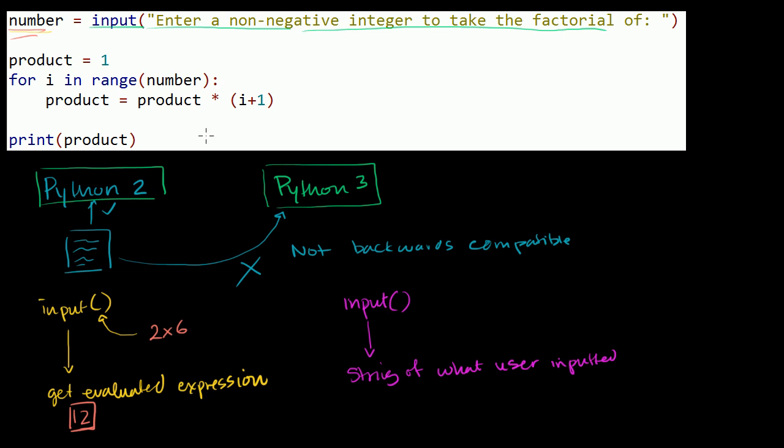In Python 3, if we just did this and the user inputted 2 times 6, so once again the user inputs 2 times 6, then what's stored in the variable number, what's returned from this function right over here, is not going to be 2 times 6 evaluated. It is going to be a string of characters that says 2 times 6.